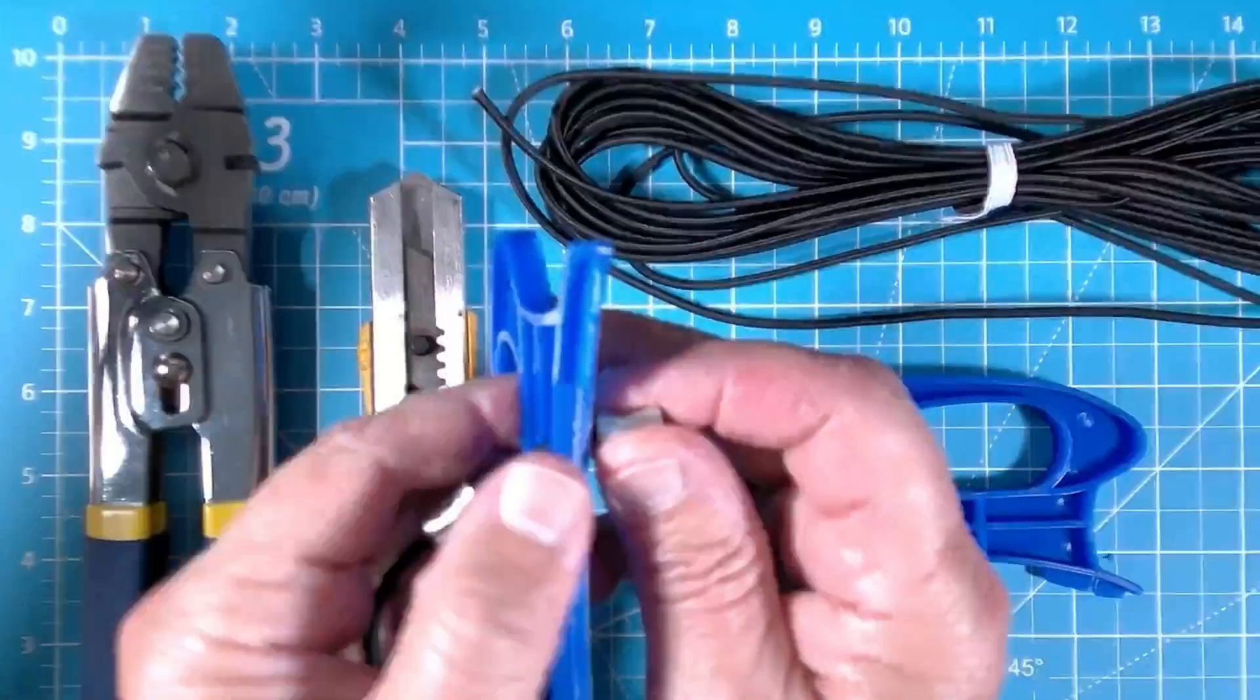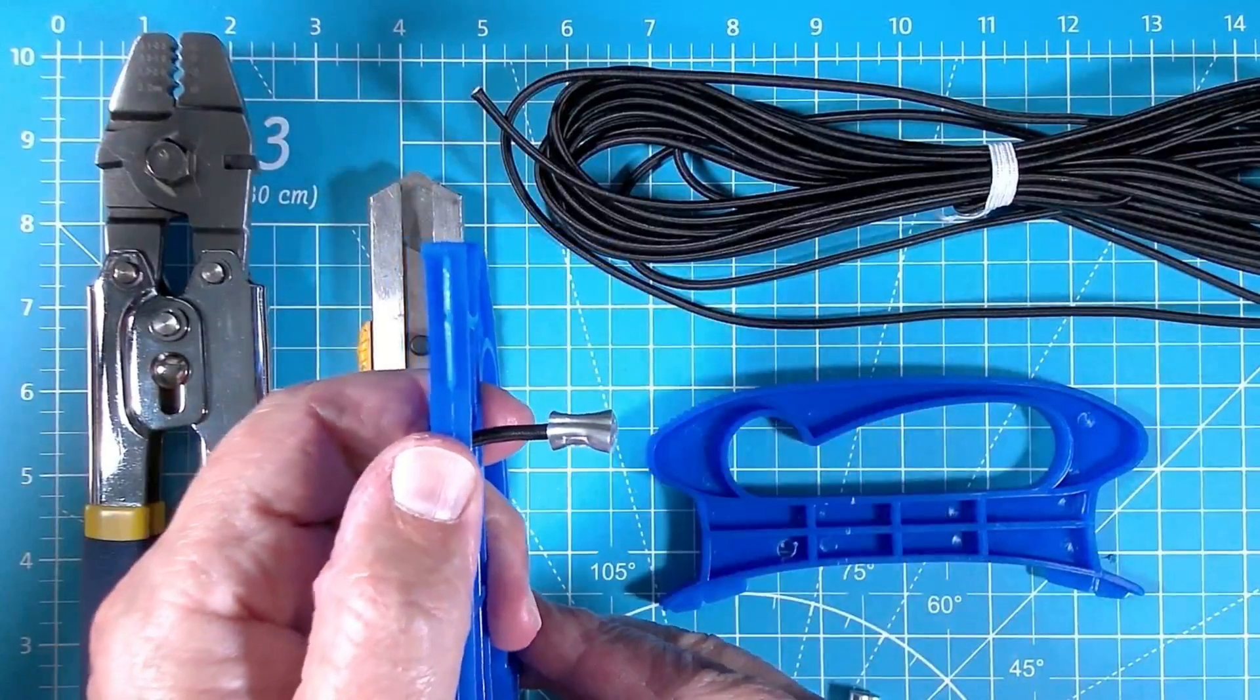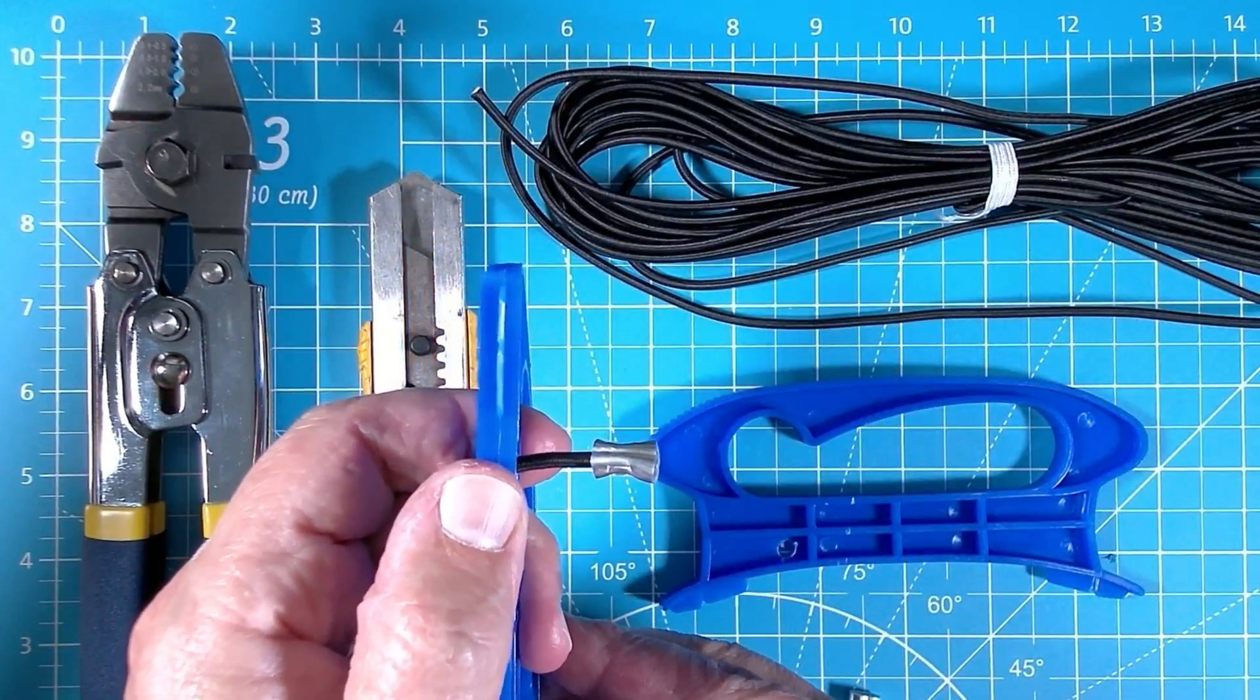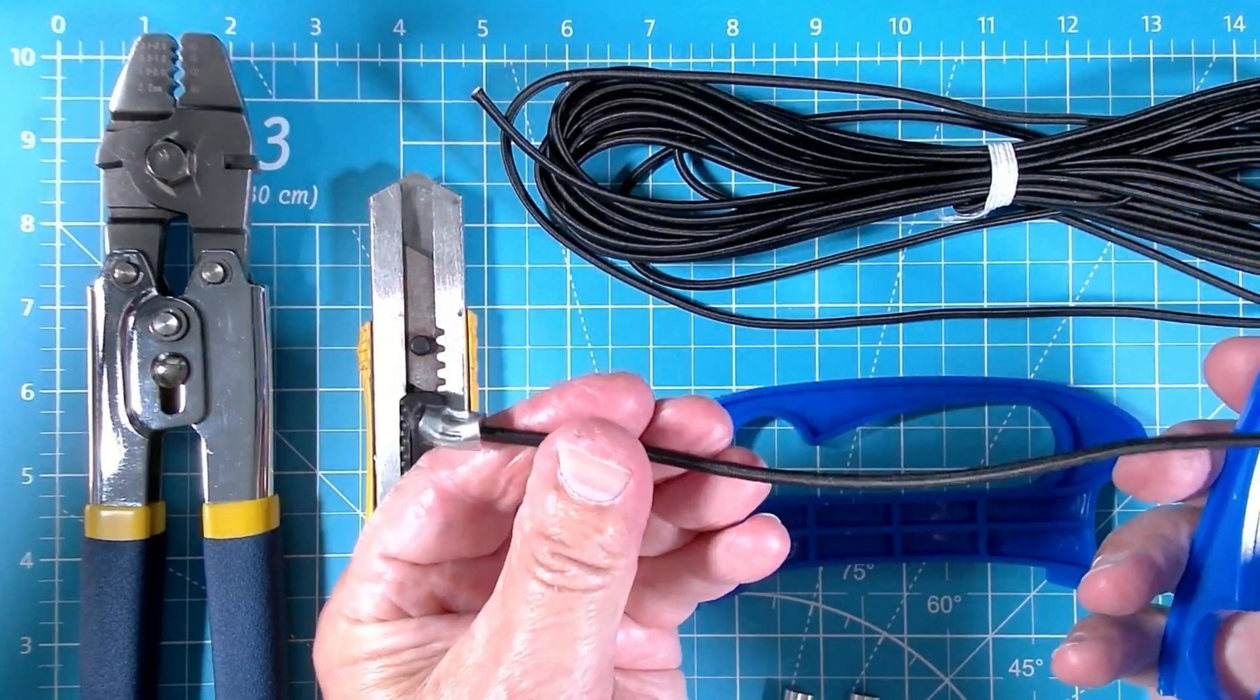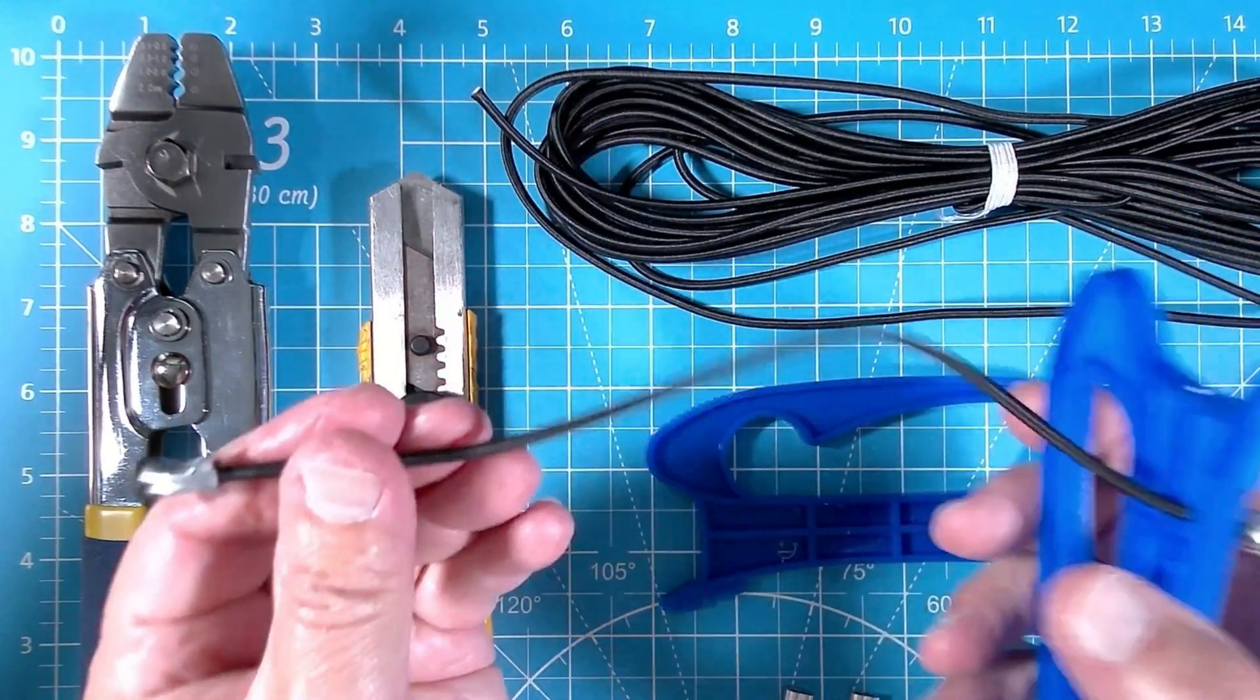I've added a crimp connector to the end of my shock cord. Yep, it's overkill but it's never coming off. And then I did the same thing to the other end of the shock cord. It's that simple. Let me show you how.